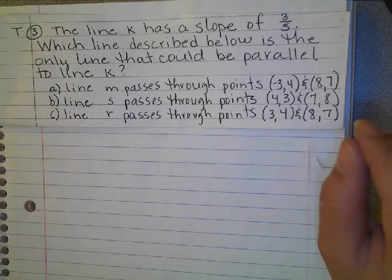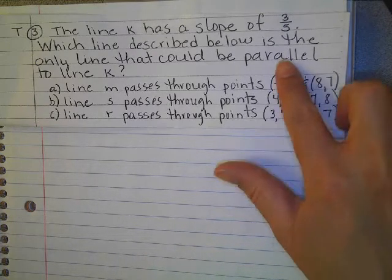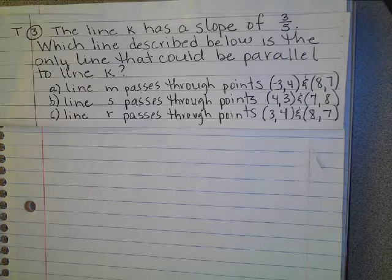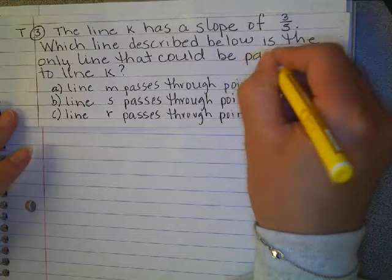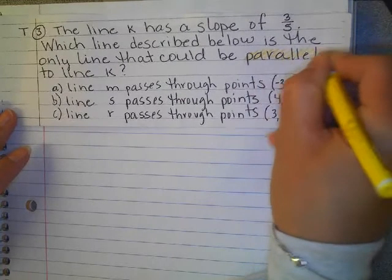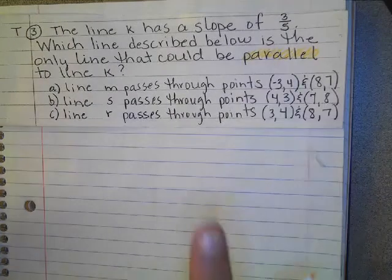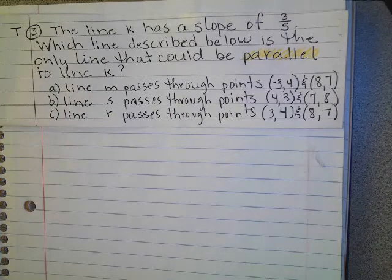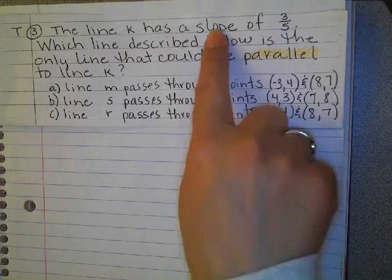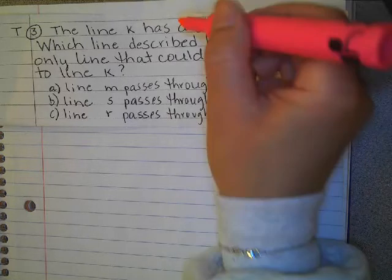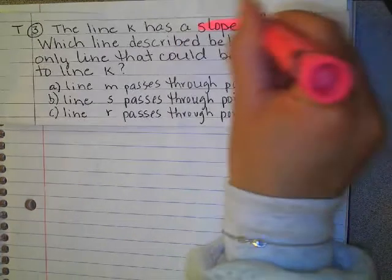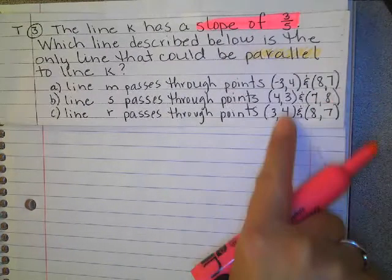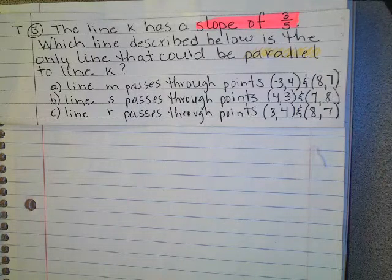Which line described below is the only line that could be parallel to line K? So again, magic word here is parallel. Parallel means that you want your lines to have the same slope. So they're already giving you the slope that you need to be looking for. One of these has to have the same slope as three-fifths.